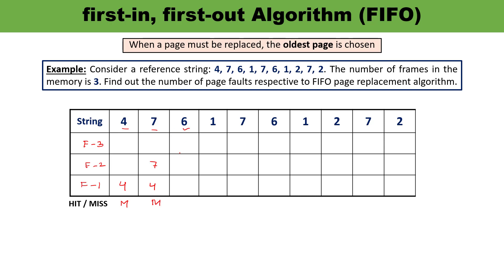After 7, 6 will arrive. So 6 will occupy this position. This is 7, this is already 4. This is the condition of miss. Now you can see all these three frames are occupied.